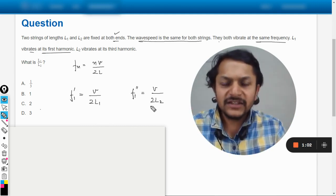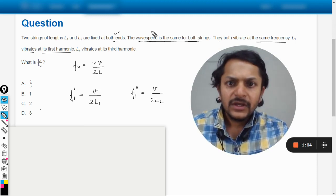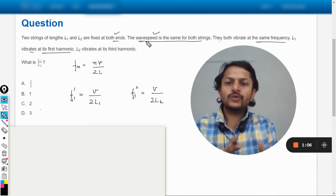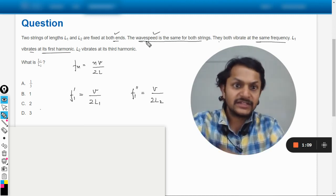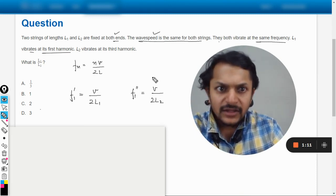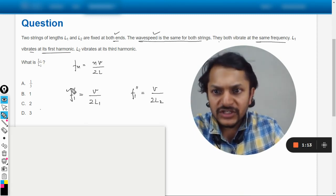Because v is the same, that is the velocity of the wave is the same. L1 and L2 are different, so the frequencies are given by this. But they say that the frequencies are also the same, so this frequency and this frequency are the same.